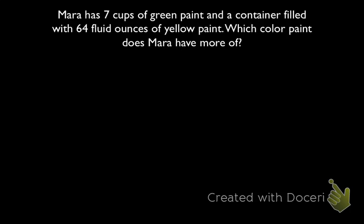Let's check out this problem. It says that Mara has 7 cups of green paint and a container filled with 64 fluid ounces of yellow paint. Which color paint does Mara have more of? Before we start any problem, it's important for us to keep an eye out for what important information you want to keep track of.